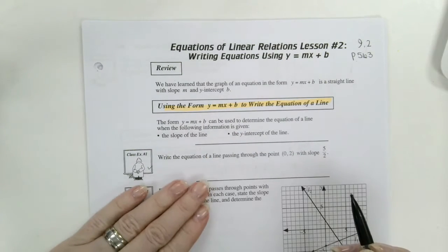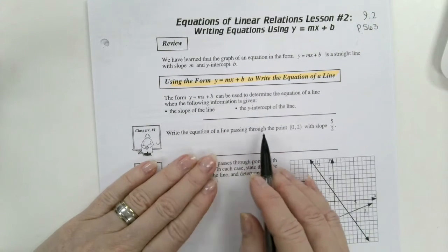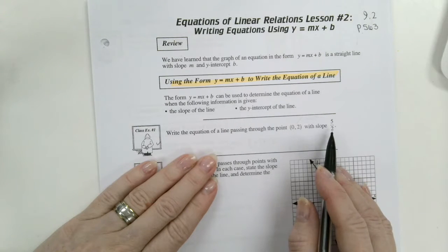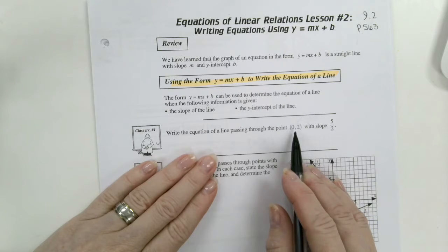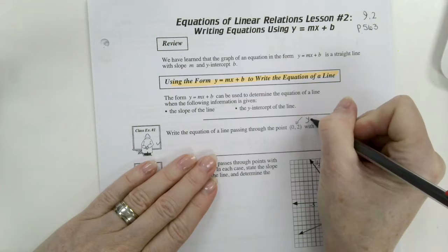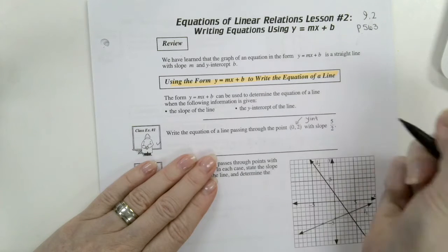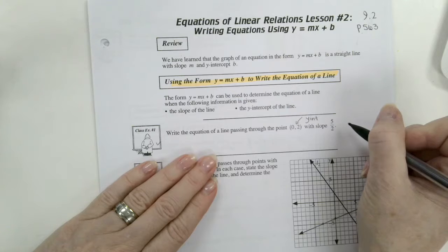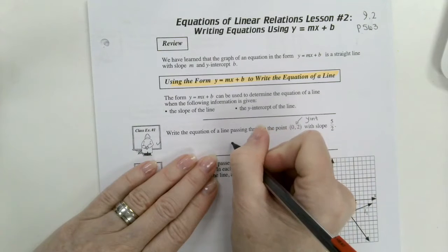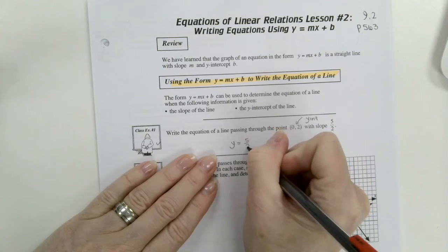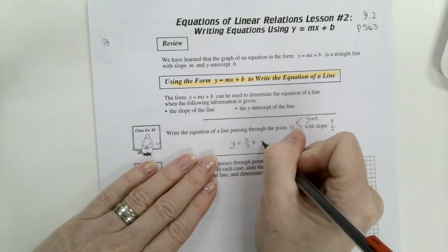Number 1. Write the equation of a line passing through the point 0 and 2 with slope of 5 over 2. So 0 and 2 is the y-intercept. They try to hide the y-intercept and the slope with different words or with giving you different parts of information. So y equals, in goes our slope, 5 over 2, x plus, and in goes our y-intercept, 2.